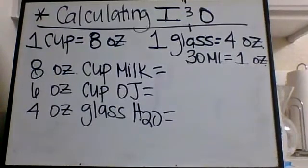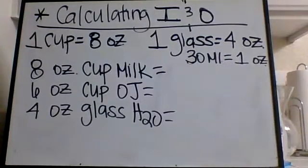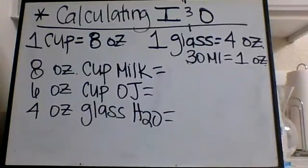Intake is considered oral fluids, IV fluids, tube feedings, and also medications. Output will be urine, vomit or emesis, bloody drainage, loose stool, NG drainage, and also perspiration.